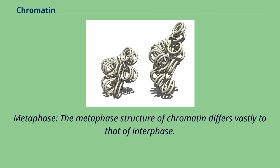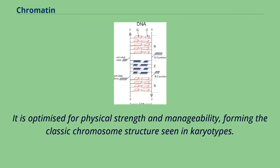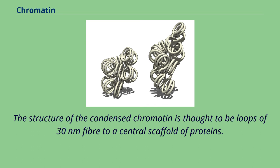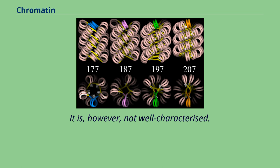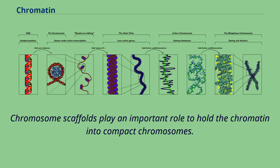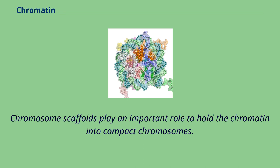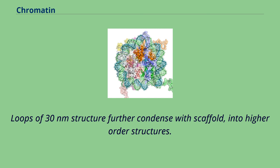The metaphase structure of chromatin differs vastly to that of interphase. It is optimized for physical strength and manageability, forming the classic chromosome structure seen in karyotypes. The structure of the condensed chromatin is thought to be loops of 30 nm fiber to a central scaffold of proteins. Chromosome scaffolds play an important role to hold the chromatin into compact chromosomes, with loops of 30 nm structure further condensing with the scaffold into higher order structures.